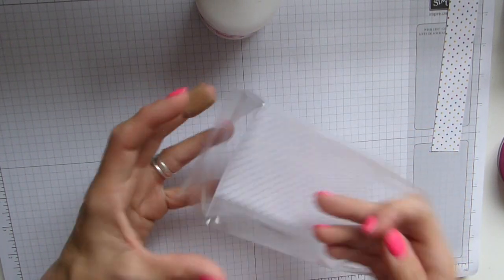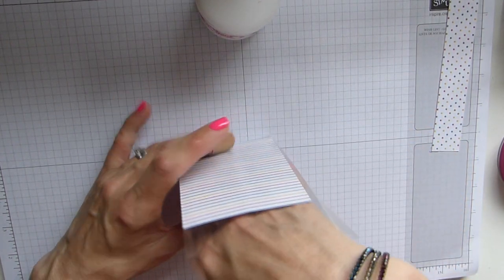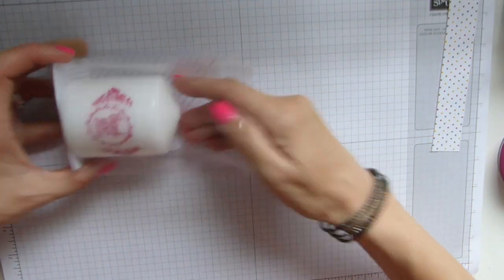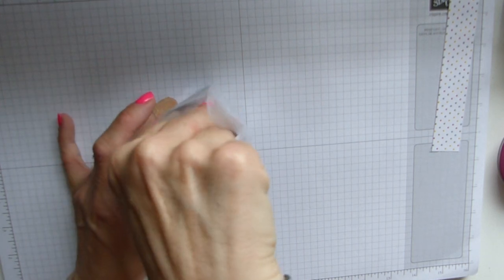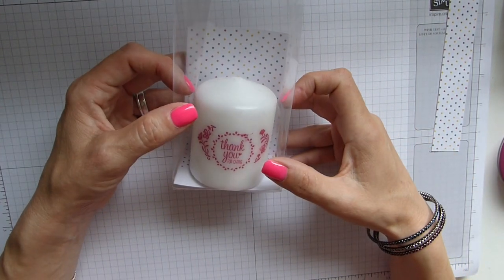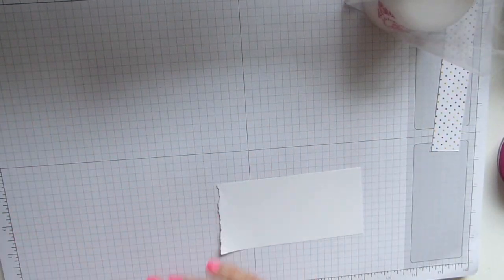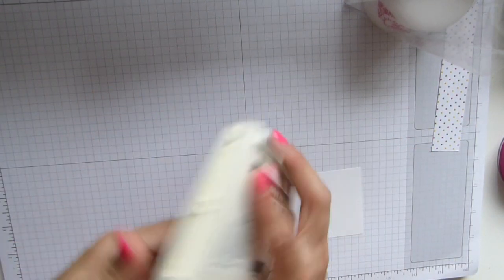You just need to fiddle a little bit and sort of force it a fraction and then we just pop our candle in. Obviously the weight of it then holds the base all in place. So we just need to do our label.